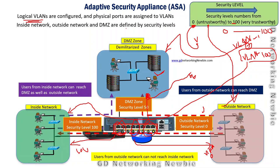Traffic from a higher security level can go to a lower security level, and for the reverse direction we need to define specific policies in our ASA firewall. One more point: out of the eight ports, two ports support PoE — Power over Ethernet — so we can connect access points or cameras that get both power and data from those two ports.